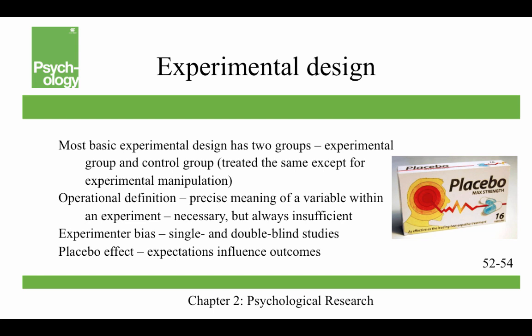Most basic experimental designs have two groups: an experimental group and a control group, and they're treated the same except for the experimental manipulation. An operational definition is the precise meaning of a variable within an experiment. Operational definitions are necessary but always insufficient — if we were studying violent behavior, we might include hitting and kicking but not abusive verbal behavior, which is certainly a violent act. That's why these definitions are necessary but always insufficient: where do you draw the line at what constitutes a violent act?